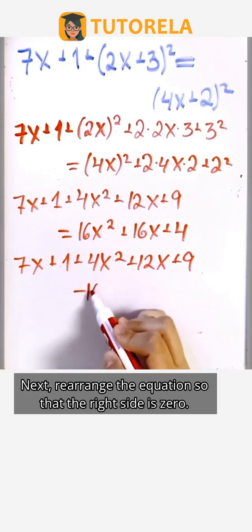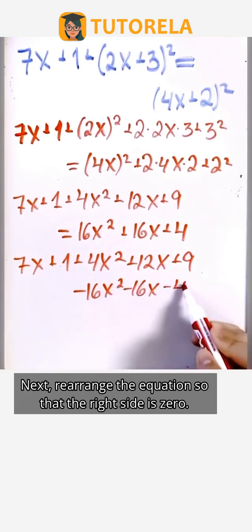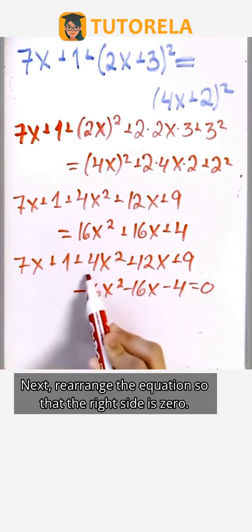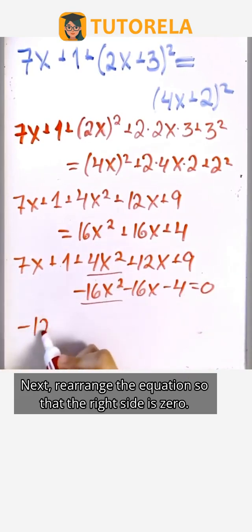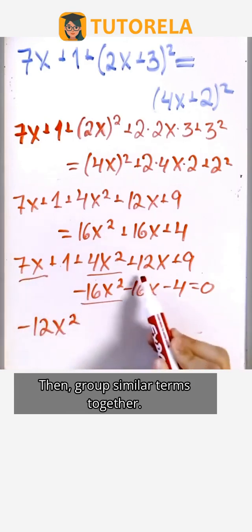Next, rearrange the equation so that the right side is 0. Then, group similar terms together.